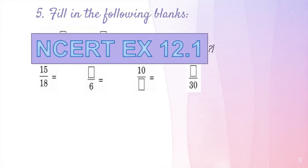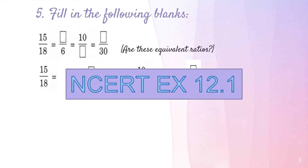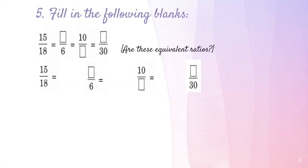Let's begin with question number five from your NCERT book, exercise 12.1. The question says fill in the following blanks: 15 upon 18 equals blank upon 6, equals 10 upon blank, equals blank upon 30. We also have to determine whether these ratios are equivalent ratios.